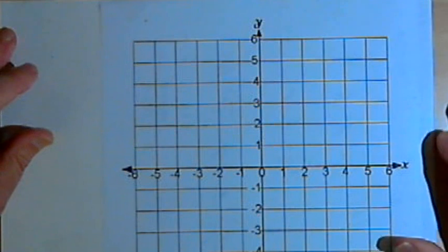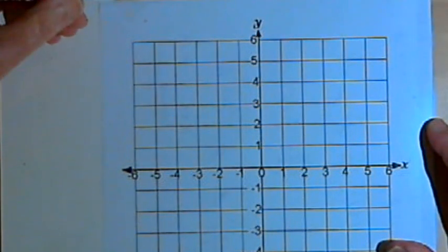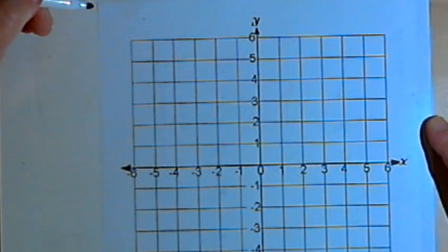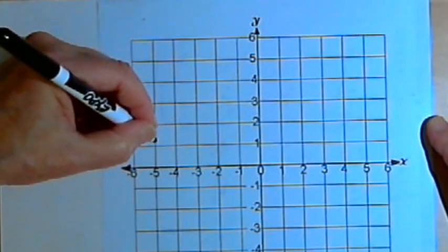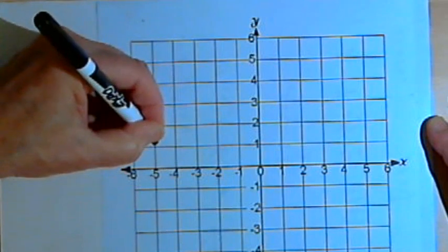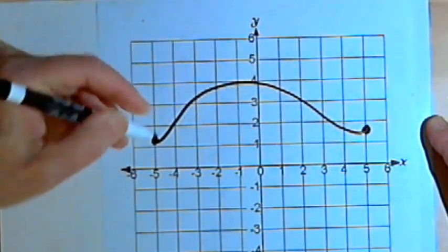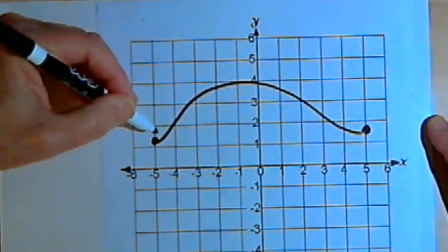We say that a function is continuous if we can sketch its entire graph without ever picking our pencil or marker up from the paper. So this function, for instance, would be a continuous function. I can sketch it from one end to the other without ever picking my marker up from the paper.